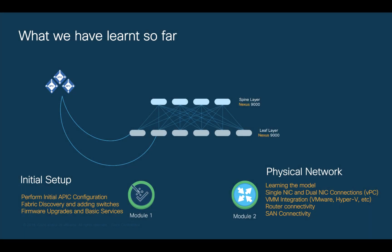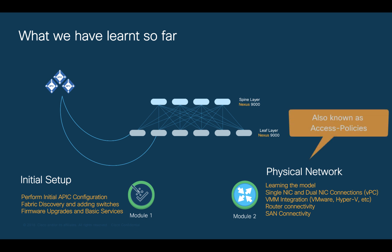In this module, we'll learn how to perform the physical network configuration on ACI by using our golden questions as an easy way to connect anything to it. We always need to perform this step, also known as Access Policies Configuration, every time we physically connect a new device to ACI. I will be adding extra chapters to this module as needed, so stay tuned.